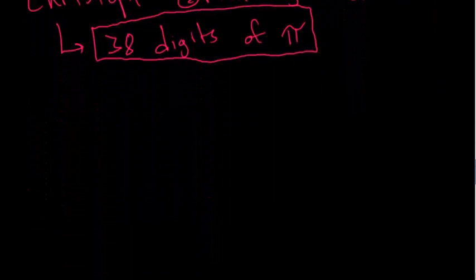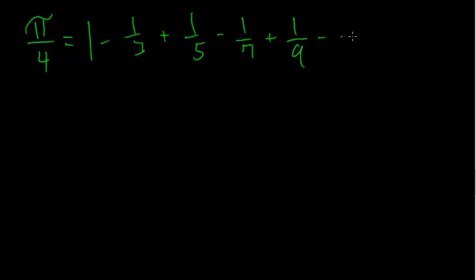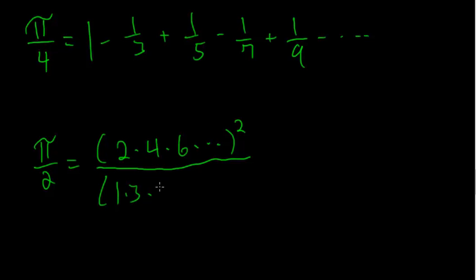A few examples of that are the series pi divided by 4 is equal to 1 minus 1/3 plus 1/5 minus 1/7 plus 1/9 minus 1/11 and so on. This goes on forever. An example of an infinite product, we have pi over 2 is equal to the product of all of the even numbers squared divided by the product of all of the odd numbers squared.